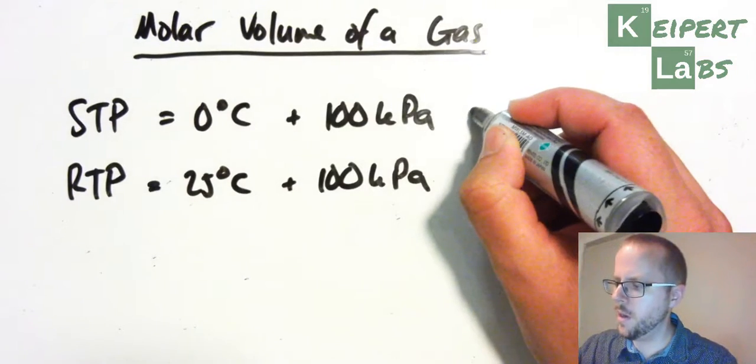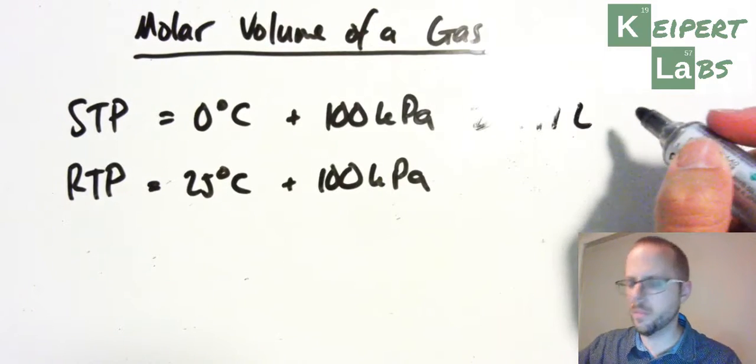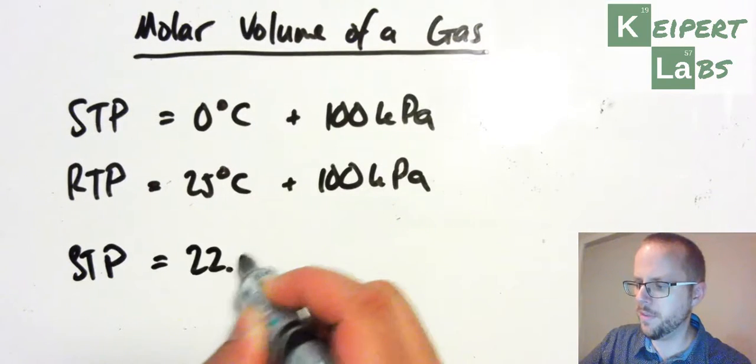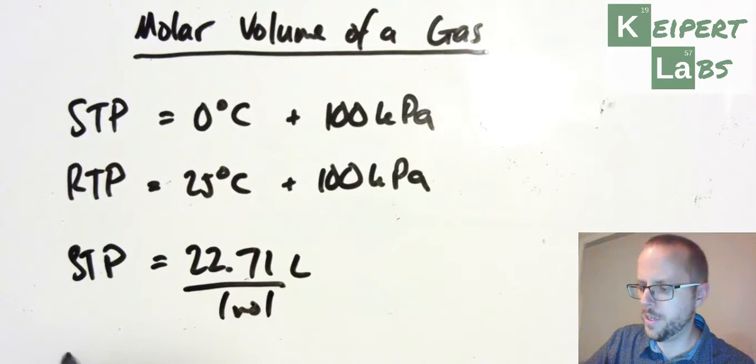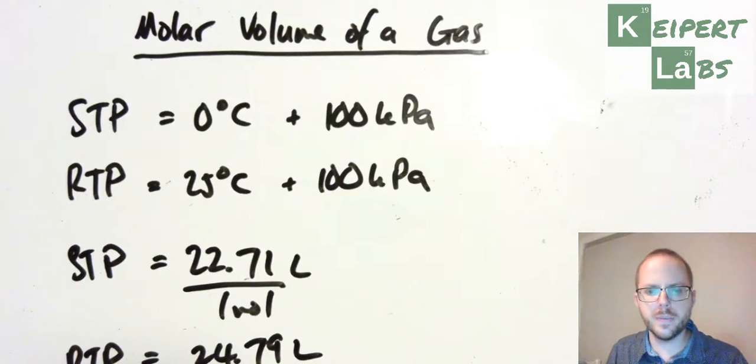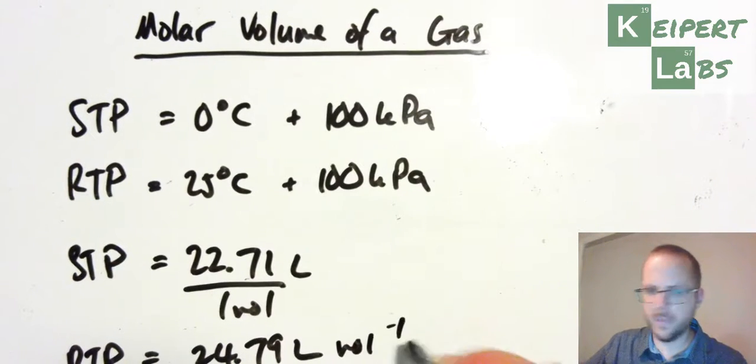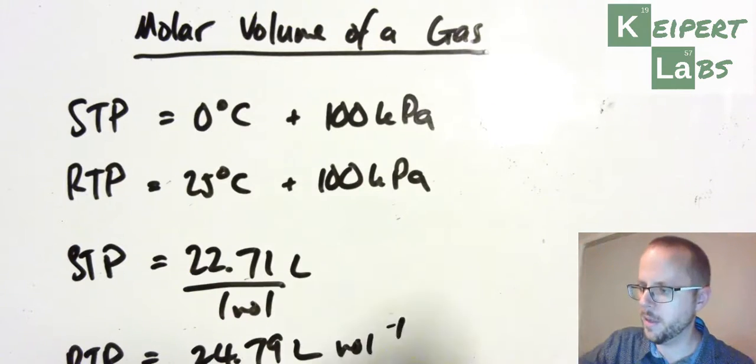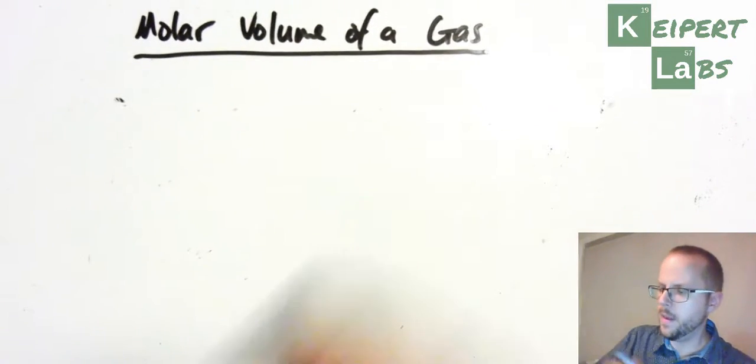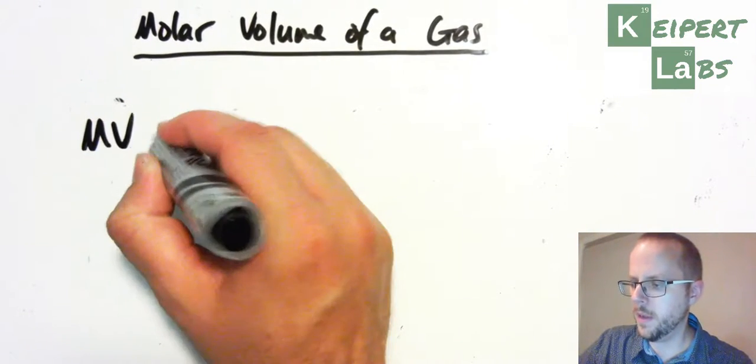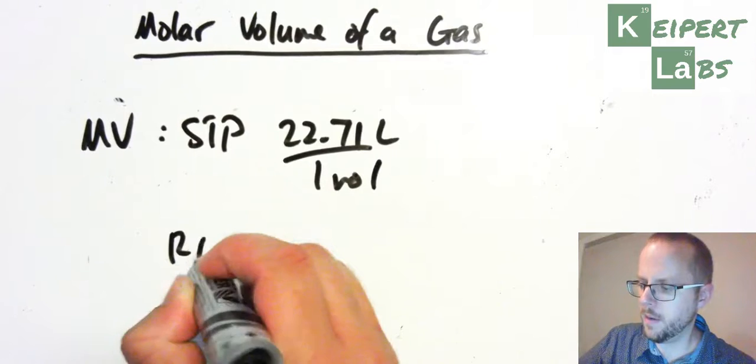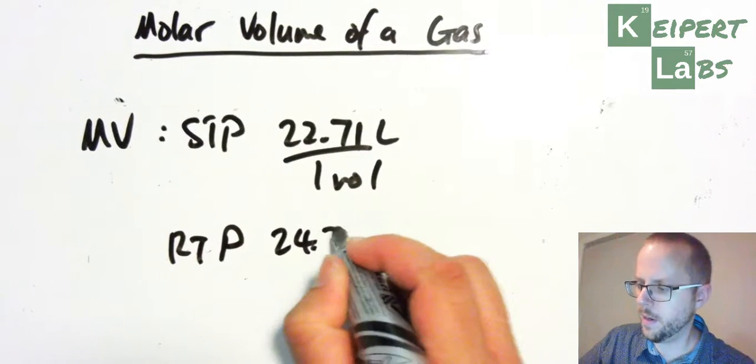So for standard temperature and pressure, one mole of any gas will take up 22.71 litres for every one mole, and room temperature and pressure is 24.79 litres for every one mole. I realise it's kind of going off the edge there a little bit. Let me quickly rewrite that. So molar volume, STP, we have 22.71 litres for every one mole, and at RTP, we have 24.79 litres for every one mole.